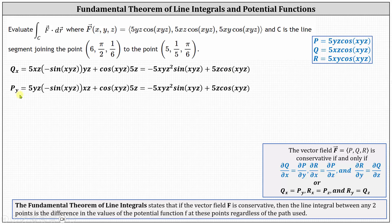Now we find the partial of p with respect to y by differentiating 5yz cosine(xyz) with respect to y, treating x and z as constants. This gives us 5yz times negative sine(xyz) times xz — this is the first function times the derivative of the second function with respect to y — plus cosine(xyz) times 5z, which is the second function times the derivative of the first function with respect to y, treating x and z as constants. Simplifying, notice the two partial derivatives are equal. We now know the partial of q with respect to x equals the partial of p with respect to y.